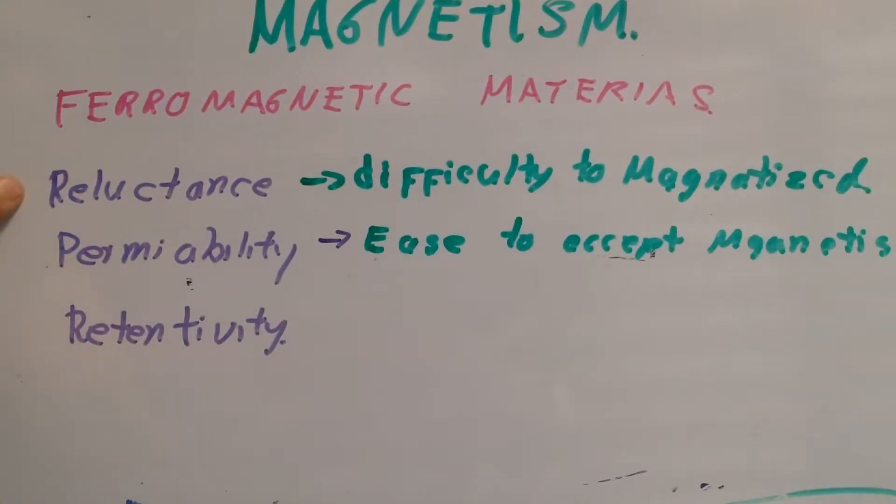Permeability is the opposite of reluctance. If we say that a piece of material is very permeable, what we're saying is that it's very easy for it to accept magnetism.